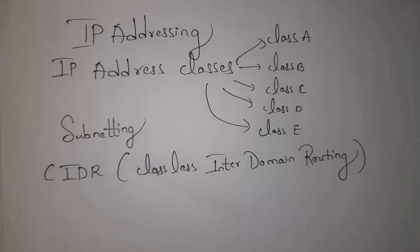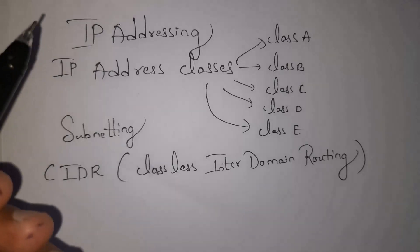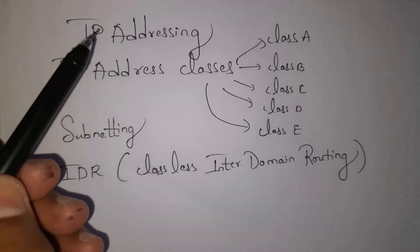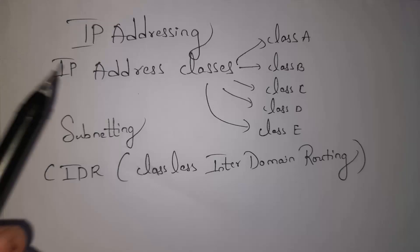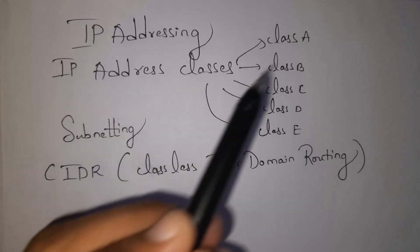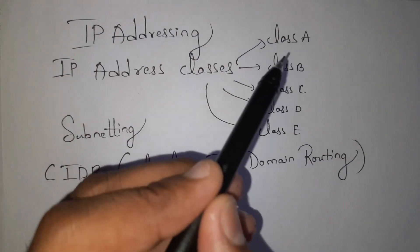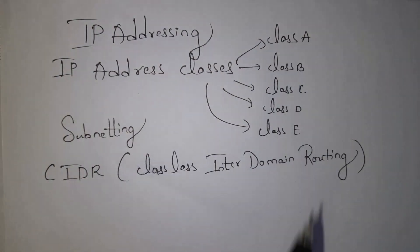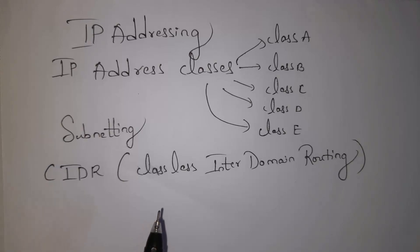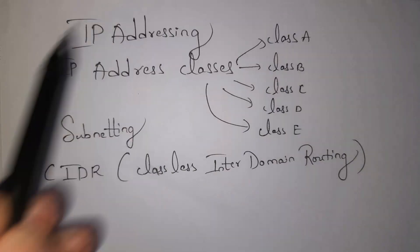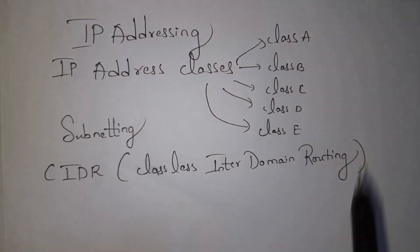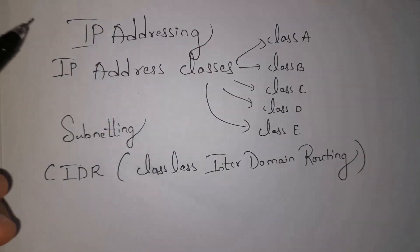Hi guys, welcome to my channel. In this video I'll be covering what is IP addressing, what are the various IP address classes — that is Class A, B, C, D, and E — and then I'll explain what is subnetting and what is CIDR, that is Classless Inter-Domain Routing. I will explain all these topics in detail.